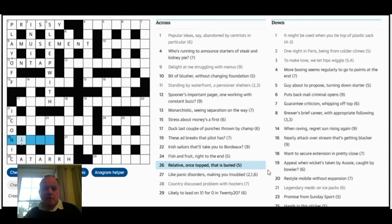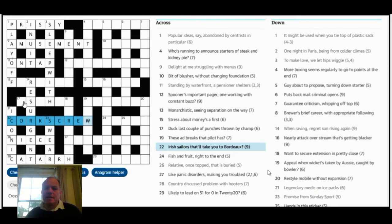26 across you take the O off once and put in IE for that is, another very common crossword abbreviation. 23 down is made up from S for Sunday and a word for sport. 14 down another long anagram, fairly straightforward. Regrets some turns into resurgent. 22 across Irish sailors, corkscrew, that's very neat. That'll take you to Bordeaux, a corkscrew I suppose does. Duck, 17 across duck, last couple of punches is the ES from punches. And then champ is chew which is fair and quite difficult. And 18 down was arm in wish.